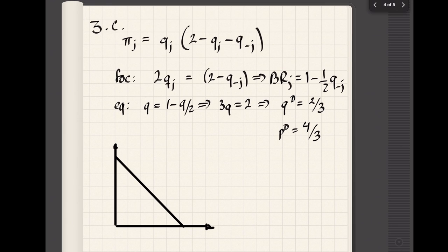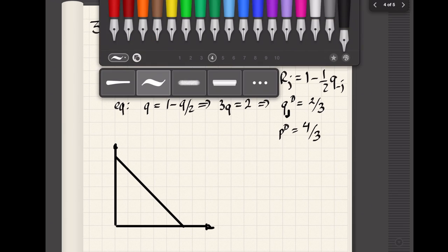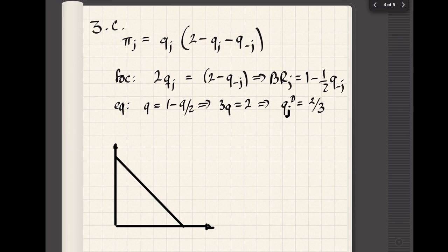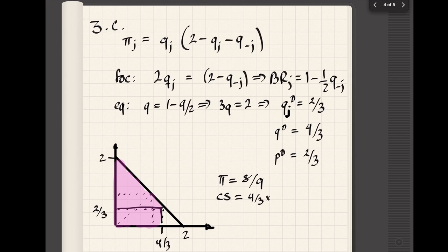In order to get the total quantity I have to multiply by two, so the total quantity is going to be twice that, so it's four thirds, which means that the equilibrium price is going to be two minus four thirds, which is two thirds. So now we're in good shape. We can graph for Cournot, and we're going to see that the profits are going to be two thirds times one third, and the consumer surplus is going to be two minus two thirds times four thirds divided by two, which is going to give us a total of sixteen over nine.